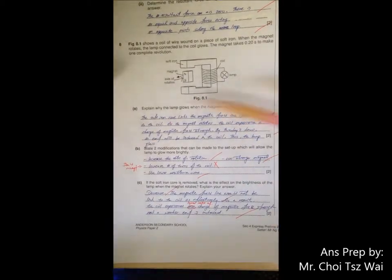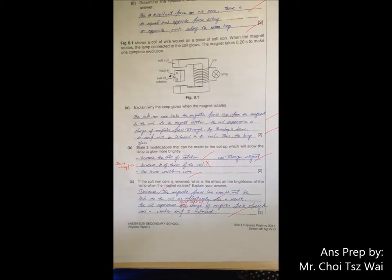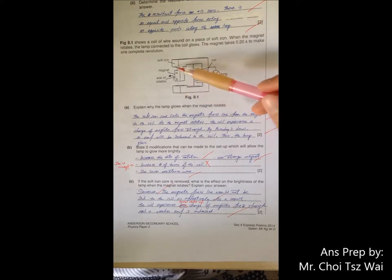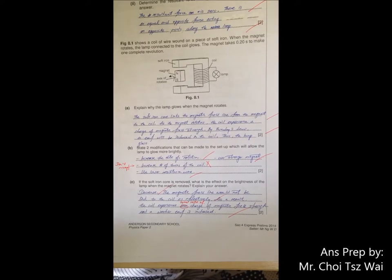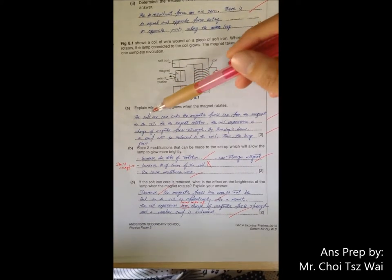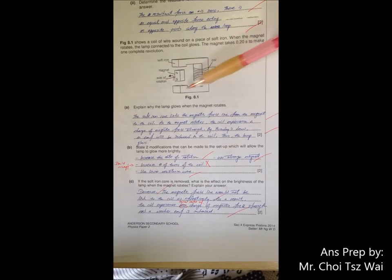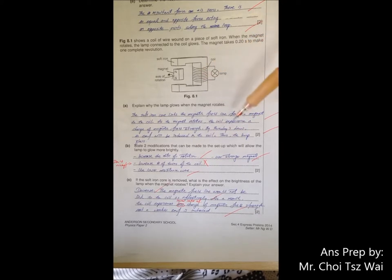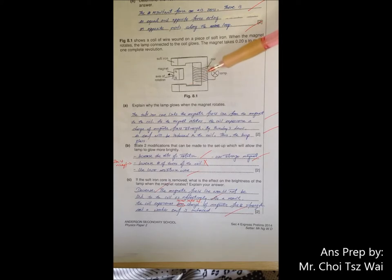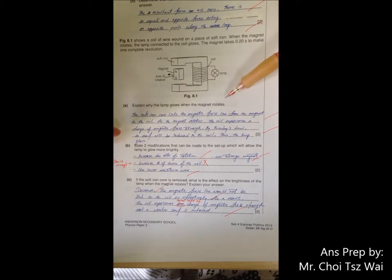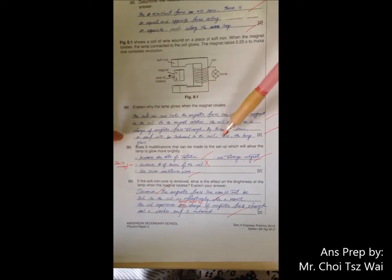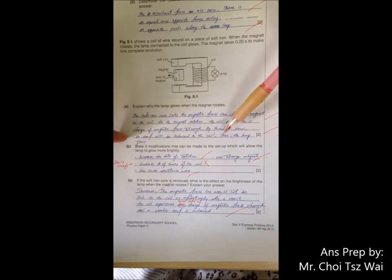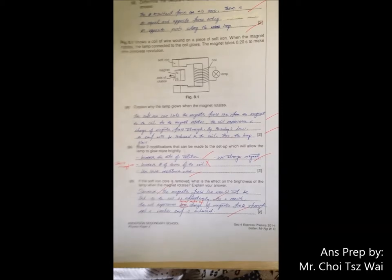Question eight. This description comes out thousands of times already. Remember to mention all the features in the setup including the soft iron core, just for completion sake. The soft iron core will link the magnetic field lines from the magnet to the coil. And as this magnet rotates, the coil here will experience a change in magnetic field strength. And so by Faraday's law, an EMF will be induced in the coil. Now since the question didn't ask you about the direction of the current or anything like that, you do not need to mention Lenz's law. But the question asks you why the lamp glows. Do not stop at the point where you say that an EMF is induced. Continue and say thus the lamp will glow due to the EMF, and your argument will be complete.